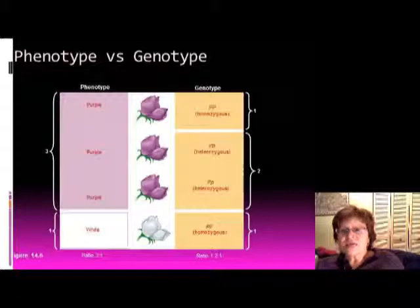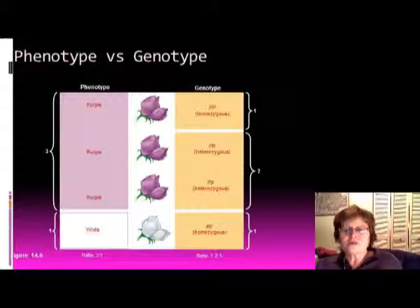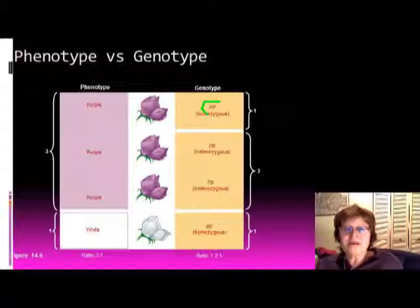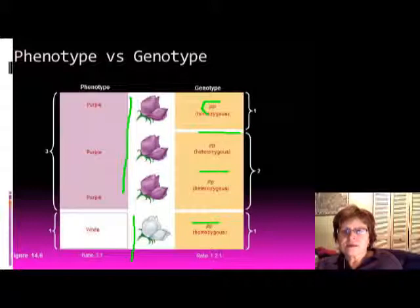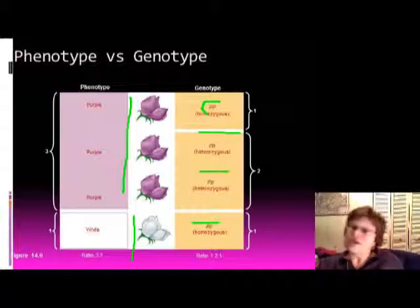The next slide shows Mendel's experiment with the pea plants. They are shown with capital P and small p because he was working with pea plants. When he first had the pea plants, they were all purple, and there was one white — and this shows you the pattern of inheritance right here.